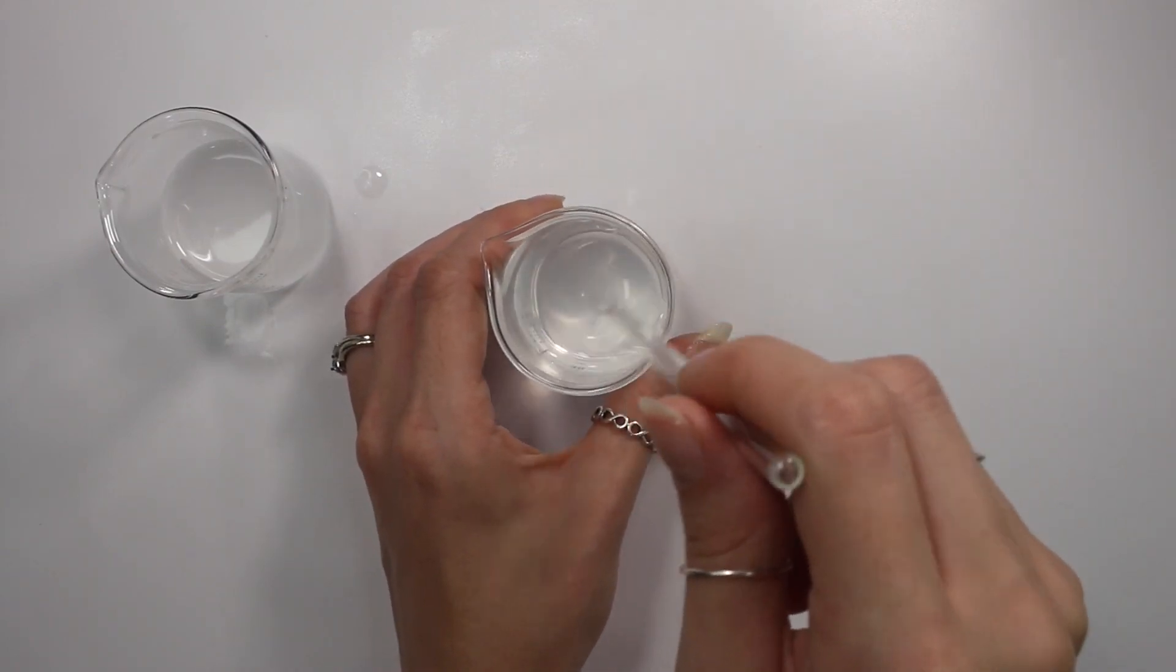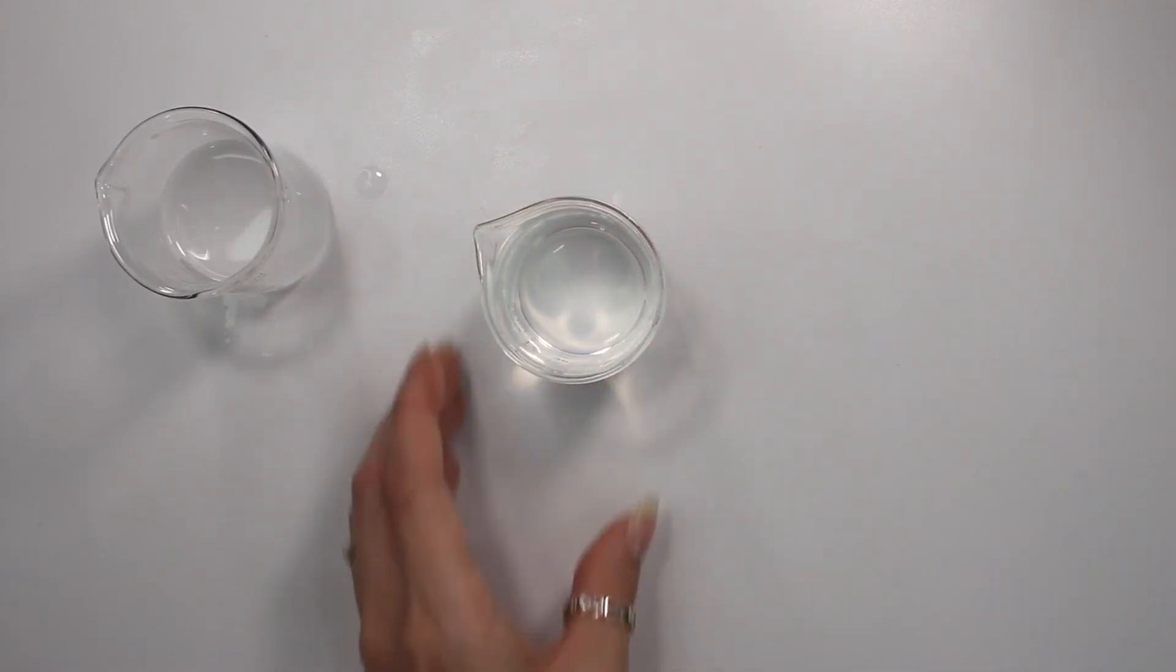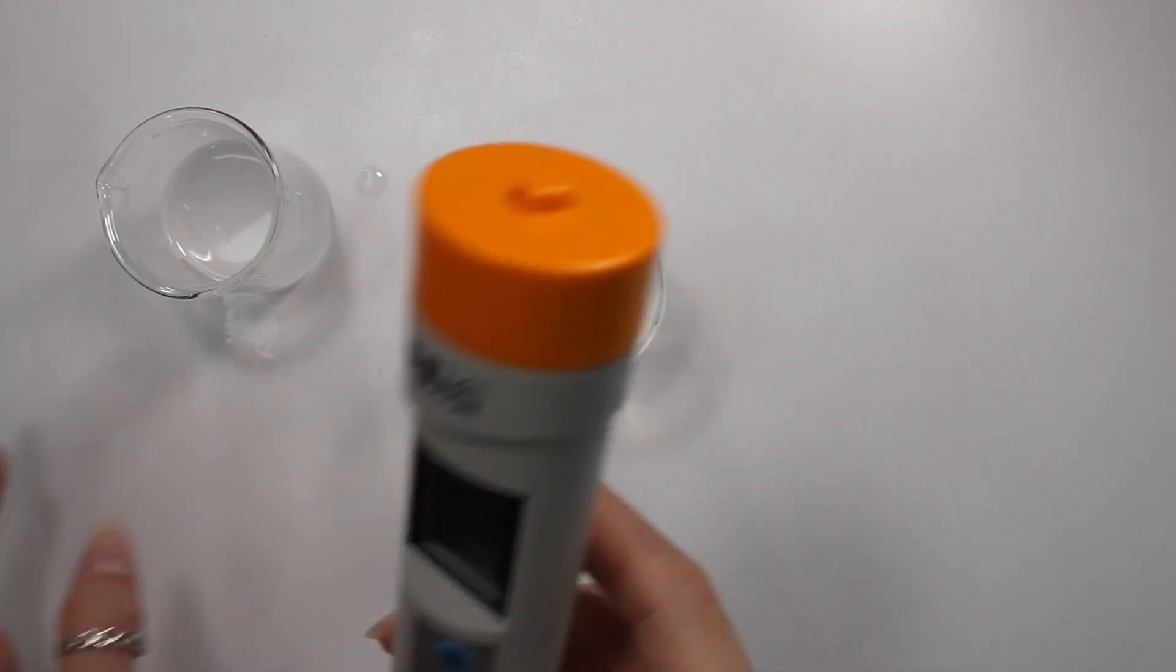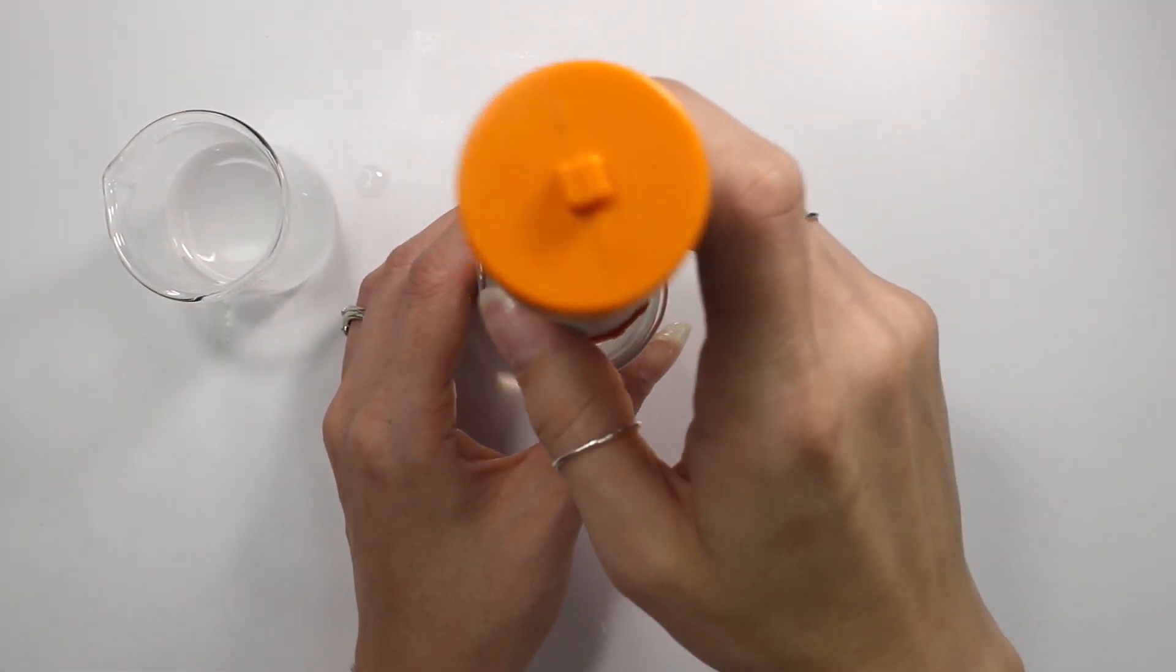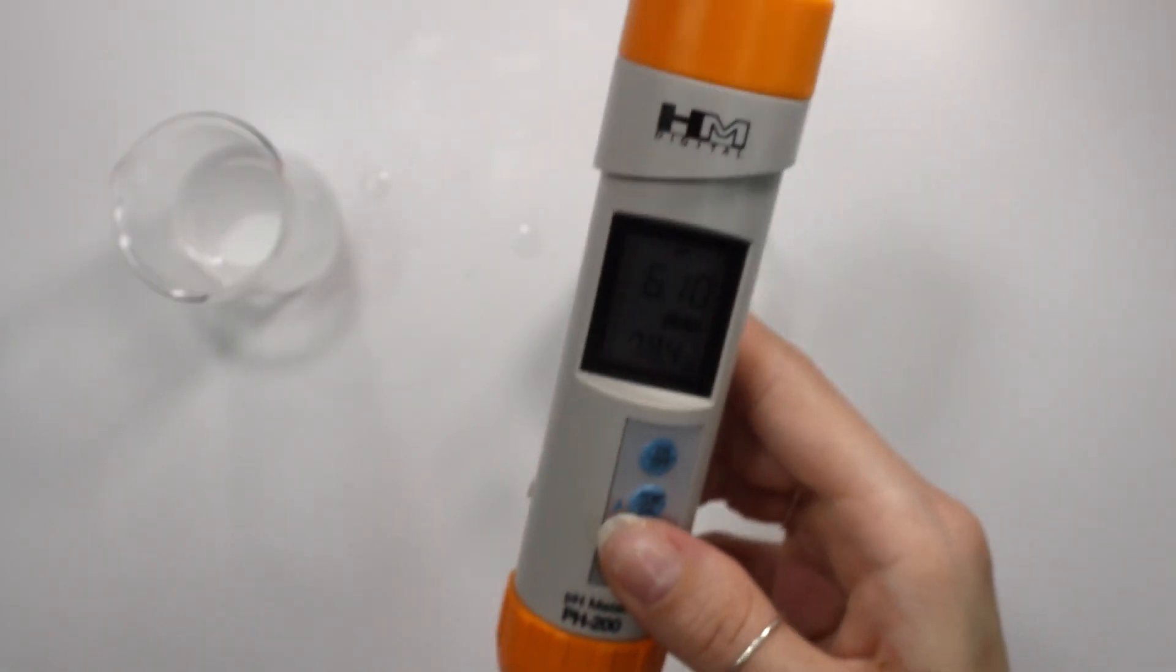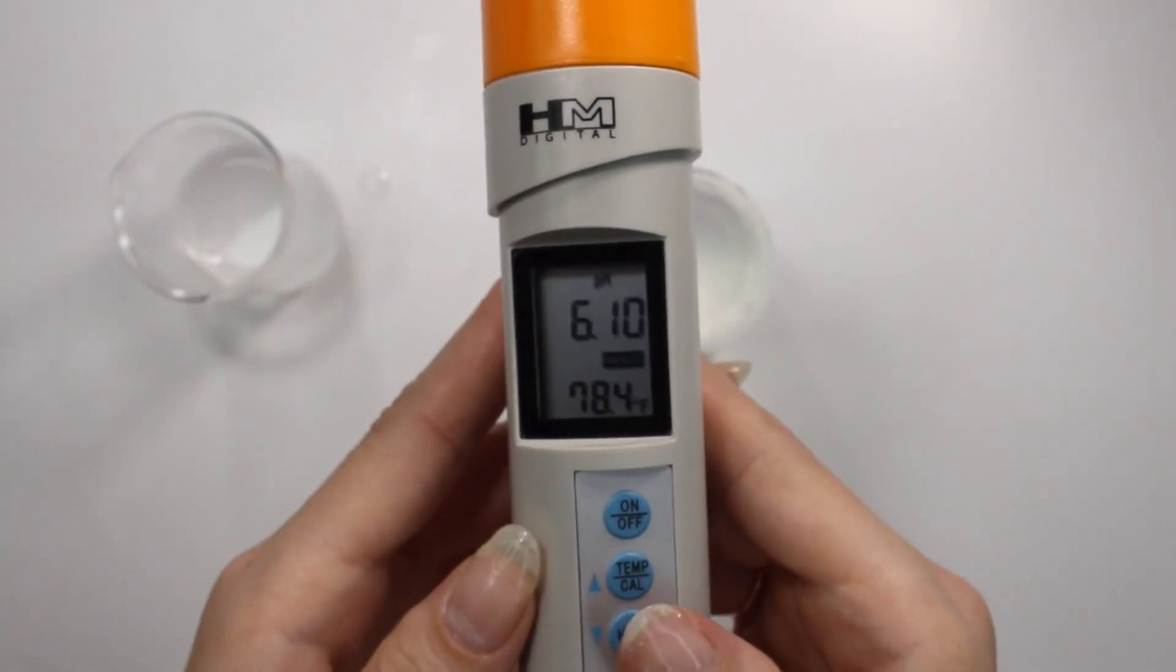So next we're going to take a pH reading of our diluted serum solution. Of course, I'm taking the more expensive pH meter first, rinsing it in my distilled water, and then swishing it around in the diluted serum solution for about a minute. And this one is reading a pH of 6.10.